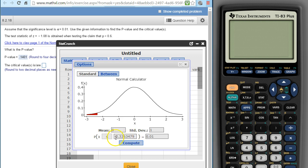So there's the number we need, negative 2.33, two decimal places.